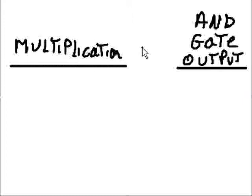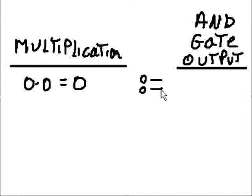Let's take a look at multiplication and the AND gate output. In multiplication, 0 times 0 equals 0. An AND gate with two inputs: if input 1 is 0 and input 2 is 0, then your output will be 0.